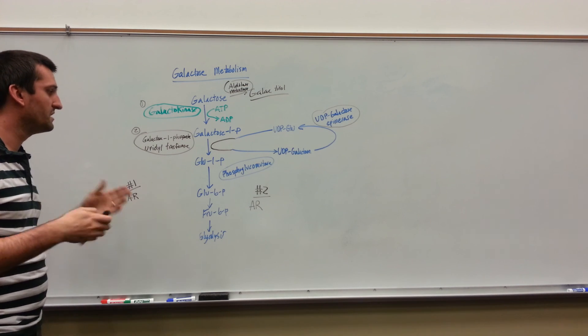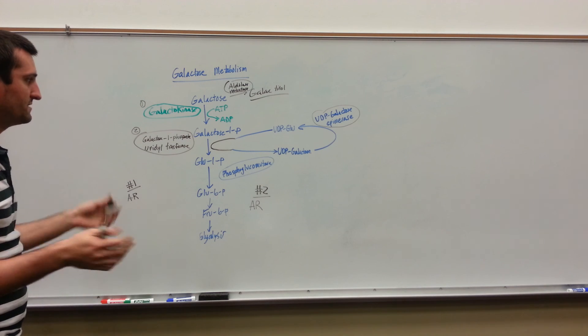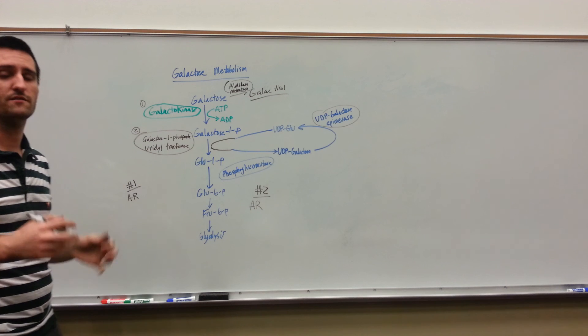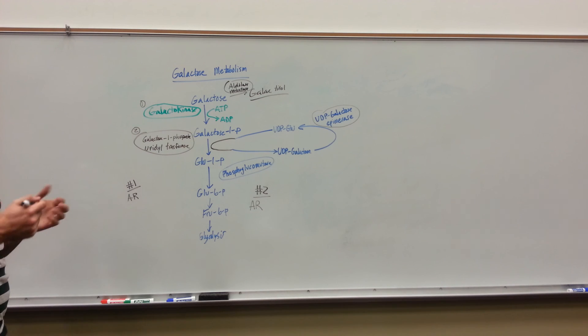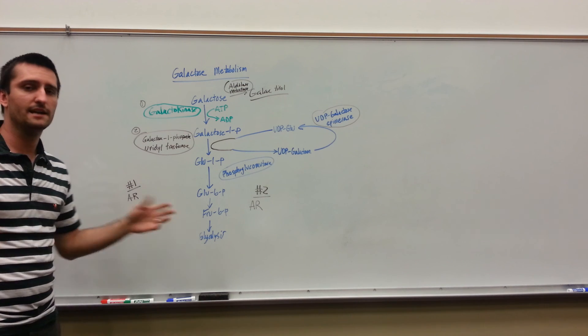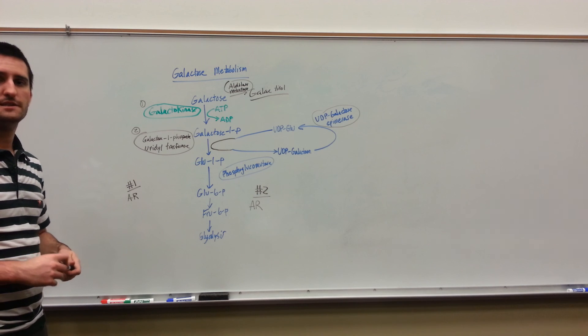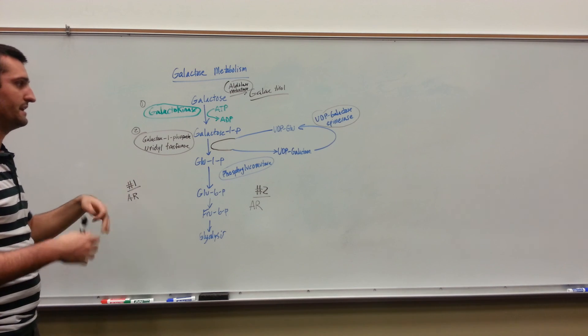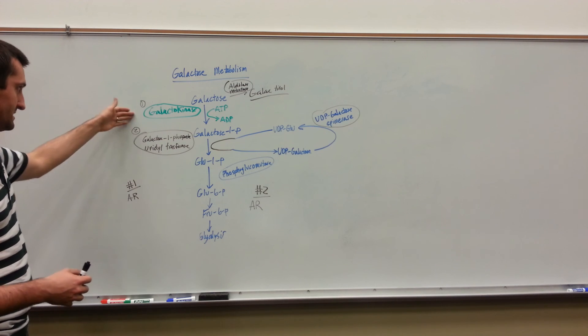However, this disease is a little more severe. You're going to have hepatosplenomegaly. You're going to have enlargement of the liver and the spleen. And then also you may have mental retardation as well. This is the basics of the galactose metabolism. I've left out some of the material, but this should give you an idea of the pathway and some of the deficiencies.